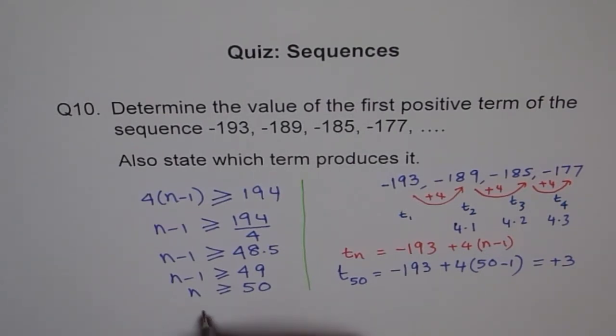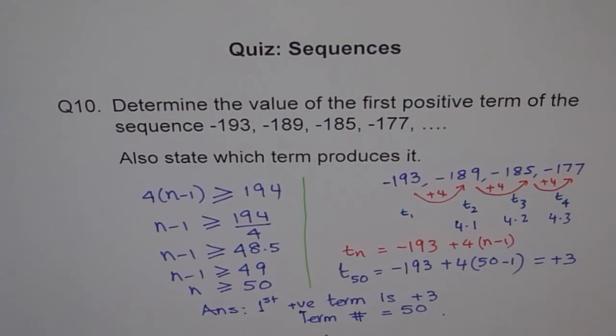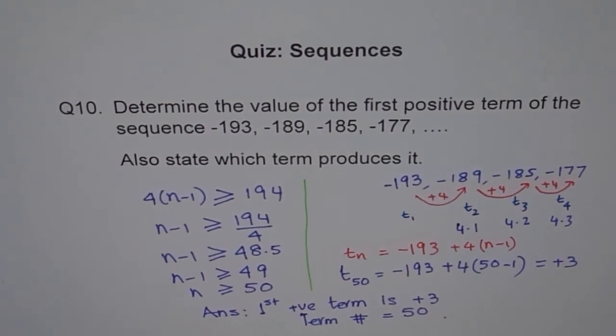So the answer here is, first positive term is plus 3 and the term number is equals to 50. While I am writing first positive, all short forms, you should write complete. Thank you. I hope you understand this. It is a very good problem. Go through the video again. Thank you.